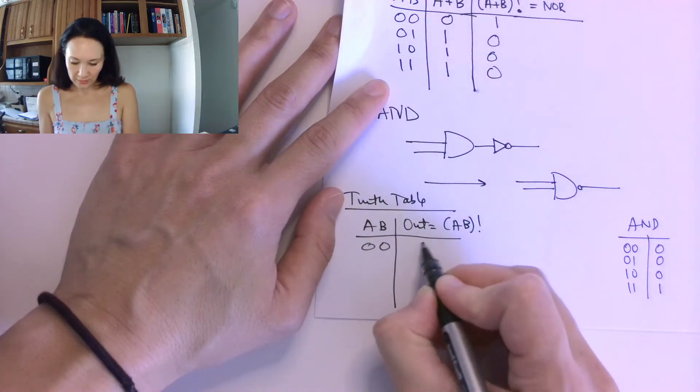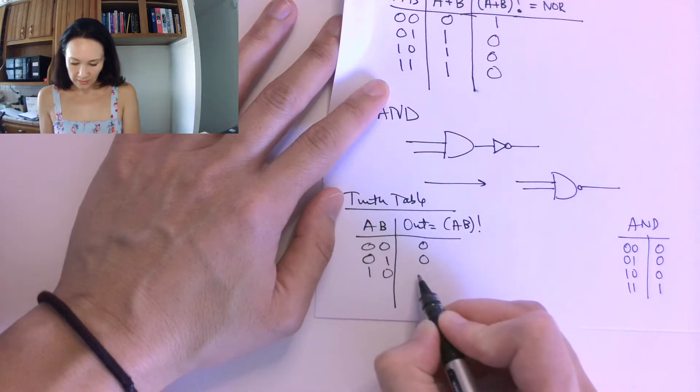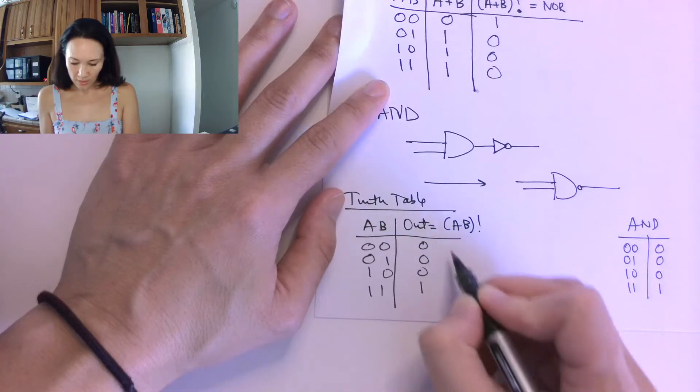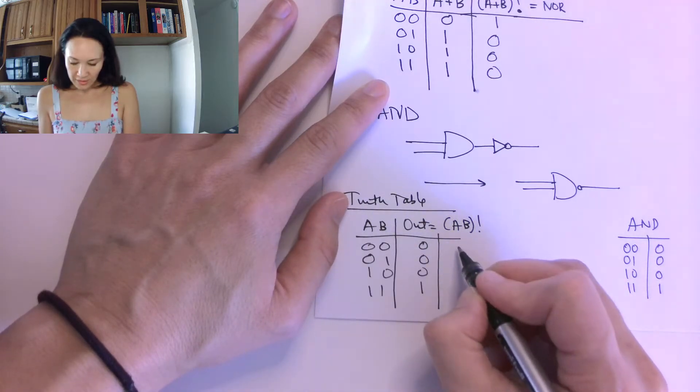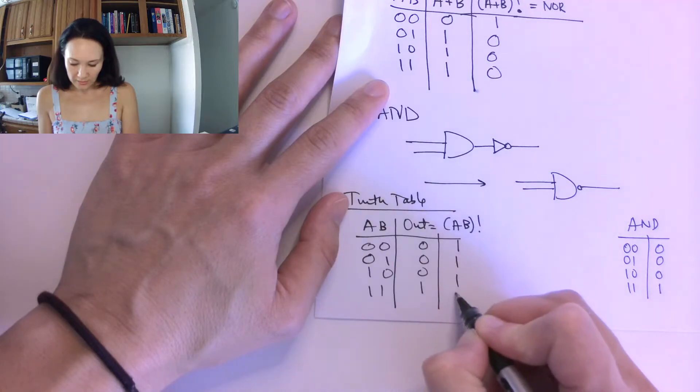0, 0 will give us a 0, 0, 1 is a 0, 1, 0 is a 0, and 1, 1 is a 1 for the AND. But then, if we invert all these outputs, we get 1, 1, 1, 0.